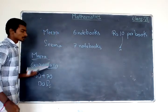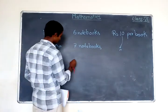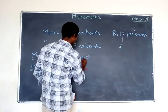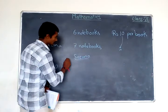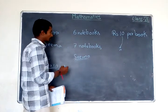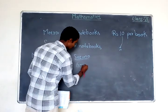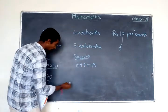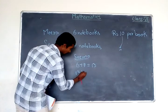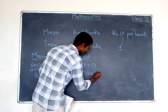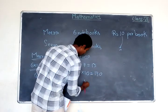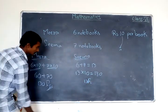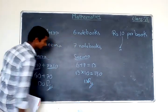But Sima calculates it in a different way. Sima first counts the total number of books: six plus seven equals thirteen. And the total cost will be thirteen into ten for each notebook, which is one hundred and thirty rupees. Both results are the same — one hundred and thirty rupees.